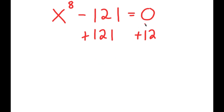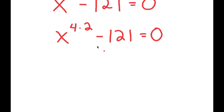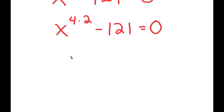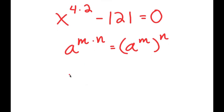So how are we going to find all of the solutions? Our first step is to rewrite x to the power of 8 as x to the power of 4 times 2. Since a to the power of m times n equals a to the power of m to the power of n, we get x to the power of 4 to the power of 2.